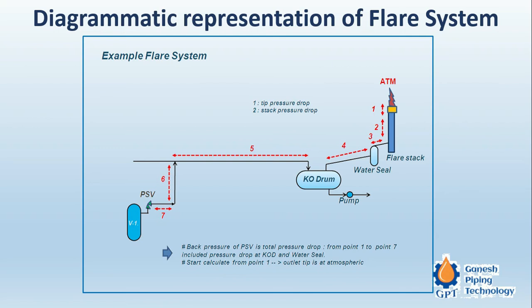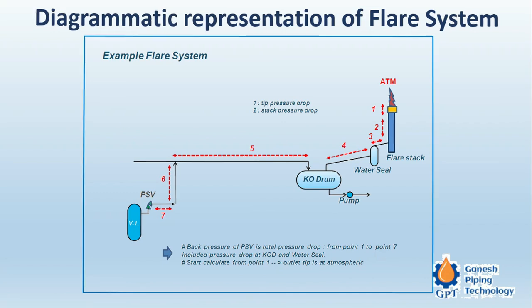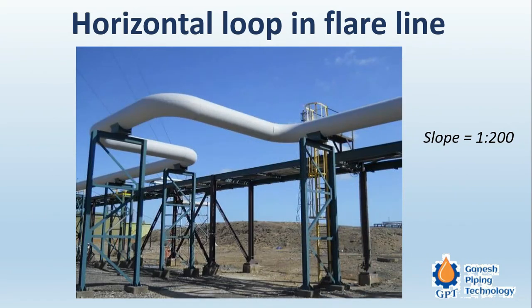At the knockout drum, condensates are pumped back to storage where they are useful, and the excessive gas which cannot be stored is burnt off in the flare stack.